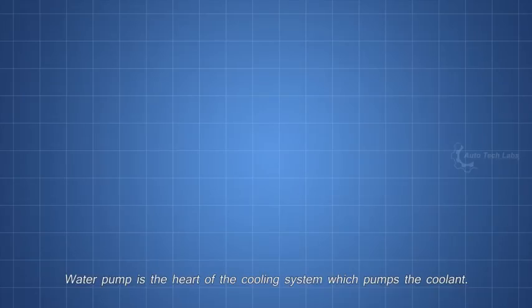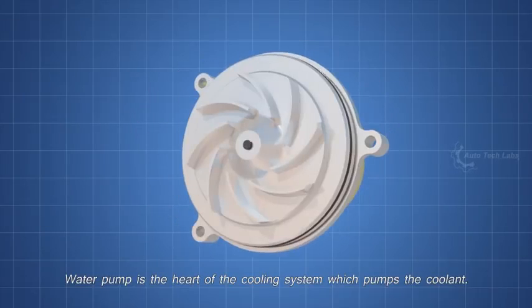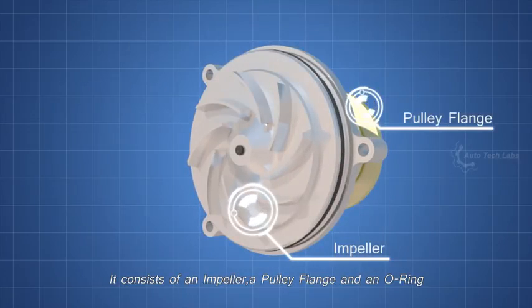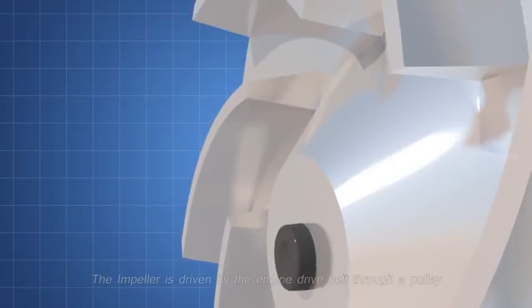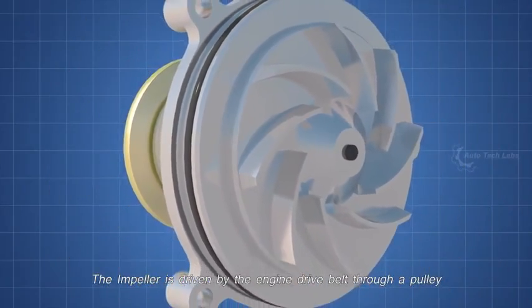First, the water pump. Water pump is the heart of the cooling system, which pumps the coolant. It consists of an impeller, a pulley flange, and a no-ring. The impeller is driven by the engine drive belt through a pulley.